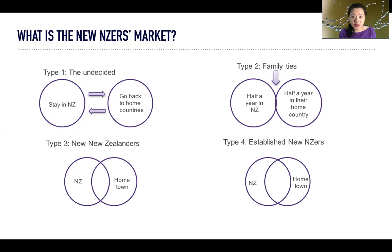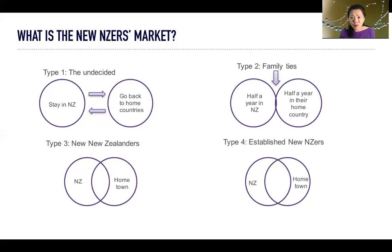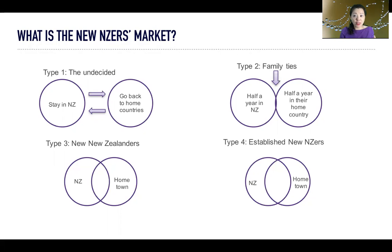Type three is what I would call the New New Zealanders — people like myself, who have spent nearly half their time in their home country and half in New Zealand. We call ourselves Chinese New Zealanders. We can't call ourselves Chinese anymore because we didn't live in China every year. Most of our growing-up time was here in New Zealand. We are bicultural and have a mixed identity, so we are more open-minded and accept different things. We face more opportunities as well as more struggles.